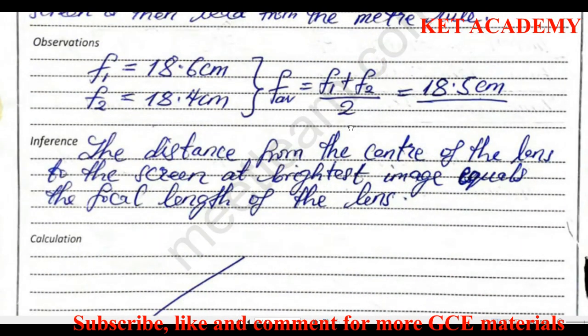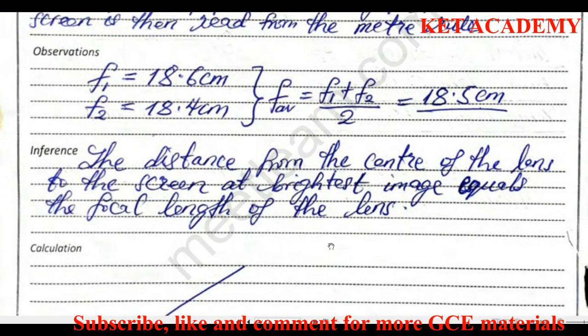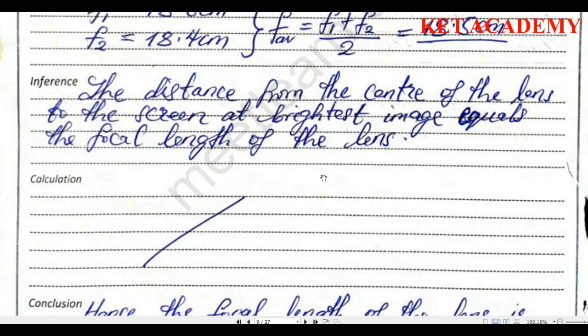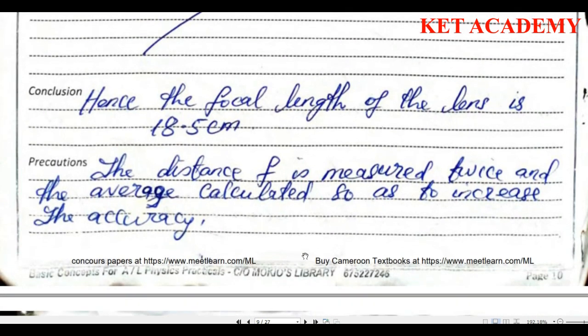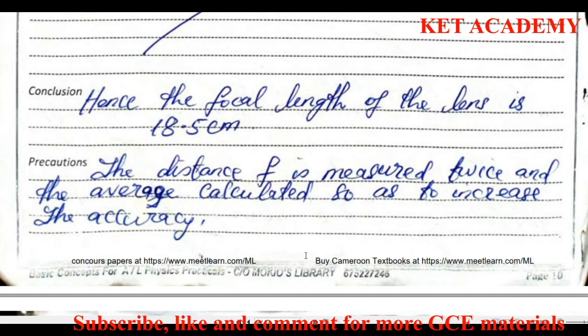For your conclusion and calculations, repeat the same calculations or keep the working clear. Your conclusion will be: hence the focal length of the lens given is this value. Remember, you'll be given different lenses. The way you report your experiment determines the marks you get, so always be truthful and go straight to the point. The precaution is: the distance f is measured two or three times and the average calculated so as to increase accuracy.